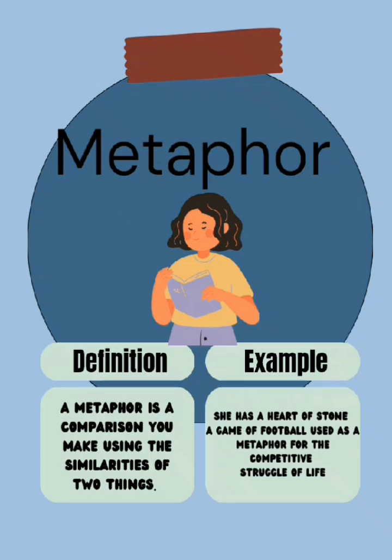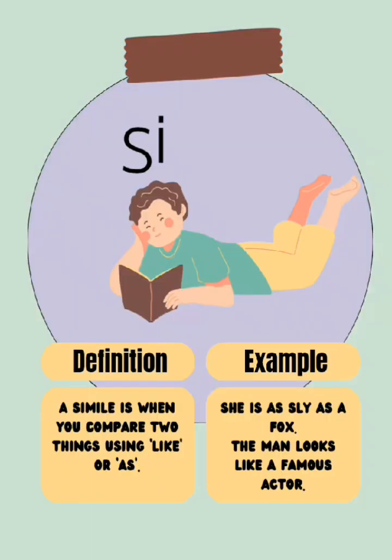The first we're looking at is metaphor. Metaphor is the comparison of two things in an indirect manner. We have the example on the slide: 'She has a heart of stone' — meaning she has a resilient spirit, a hardened heart.